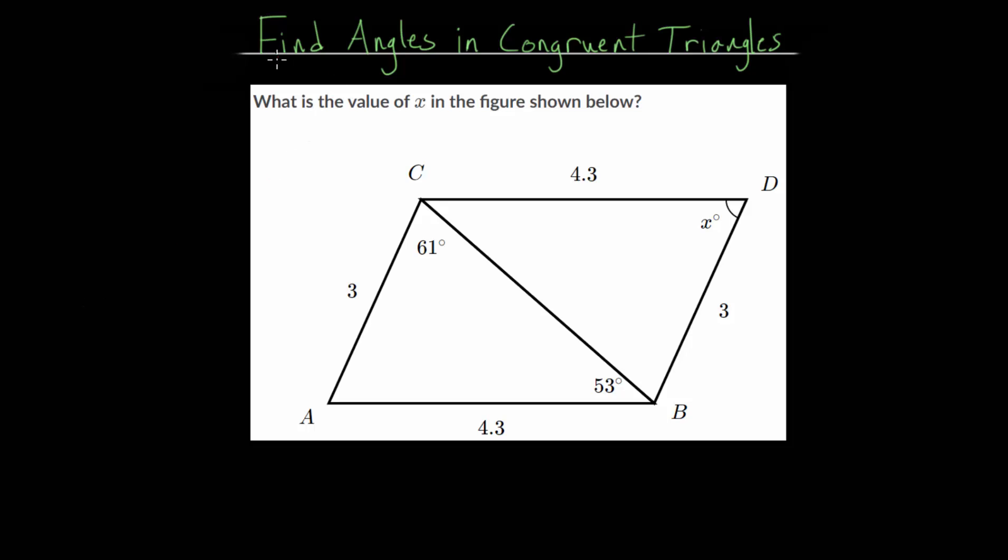In this video, I'd like to talk about finding angles in congruent triangles. With this example problem, we will use the different congruence relationships between two triangles to figure out some missing angle. In this case, we need to find the value of x right here in this figure.